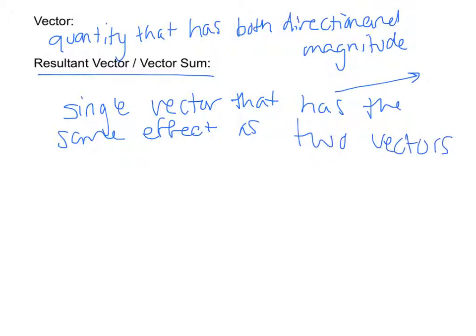A way to draw a resultant vector is to line the two vectors, the two beginning vectors up tail to tail, and then complete a parallelogram with them, using them as the sides. The resultant vector is going to be the diagonal from the tails. Here we have the resulting vector from these two beginning vectors.